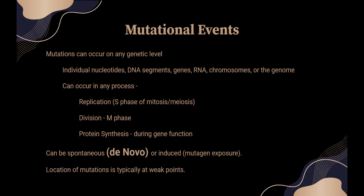Frameshift mutations can occur on any genetic level. They can happen like a point mutation at a single nucleotide pair. They can happen in larger segments of DNA — deletions and duplications. They can happen in whole genes that are defective. It can happen in those RNA codons where there's a mistake in that sequence. It can happen at the level of a whole chromosome where you have aneuploidy or translocations. It can affect the genome, and that commonly happens in cancer when the cell DNA becomes so disorganized it doesn't resemble the parent genome at all.